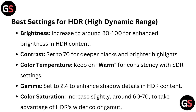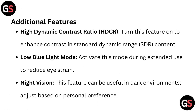Color Temperature: keep on warm for consistency with SDR settings. Gamma: set to 2.4 to enhance shadow details in HDR content. Color Saturation: increased slightly, around 60–70, to take advantage of HDR's wider color gamut.